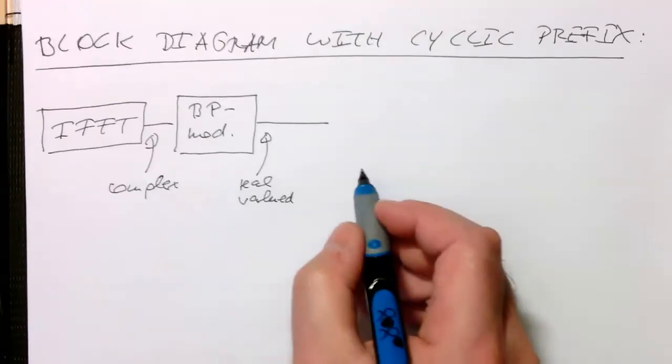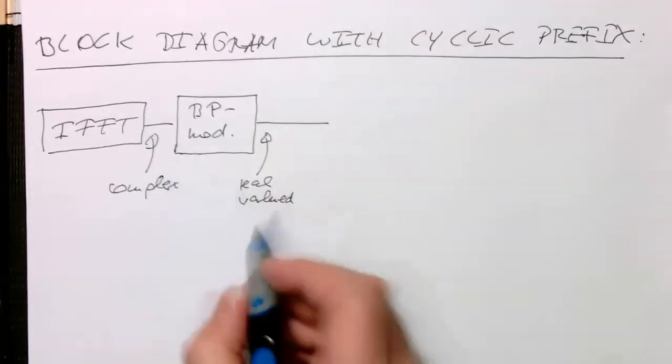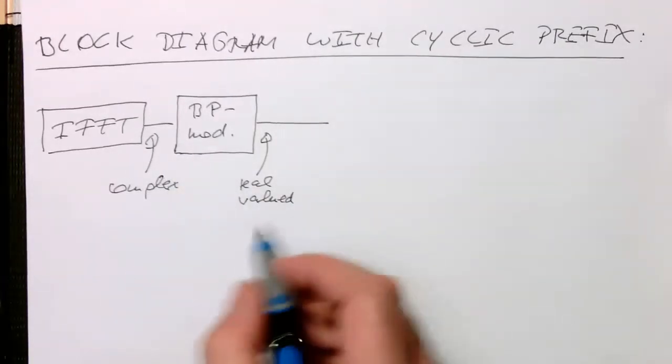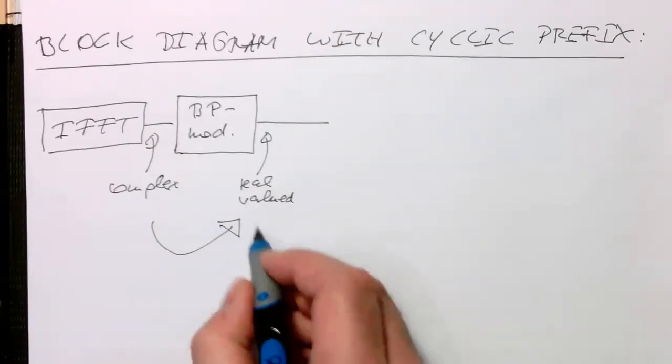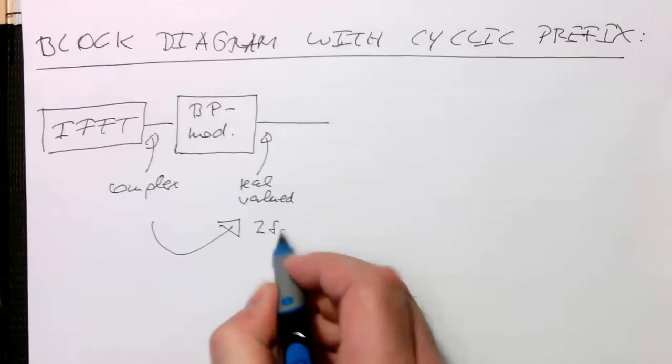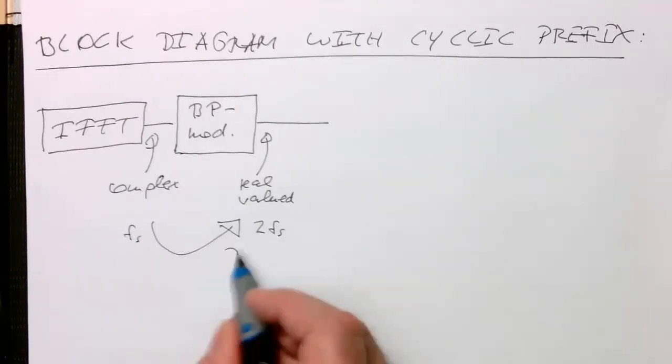And we do it on the real valued one because this has twice the sampling rate, so we're getting twice the precision here. Remember, here we have two times FS, while we have here FS, so here we have two times the precision.